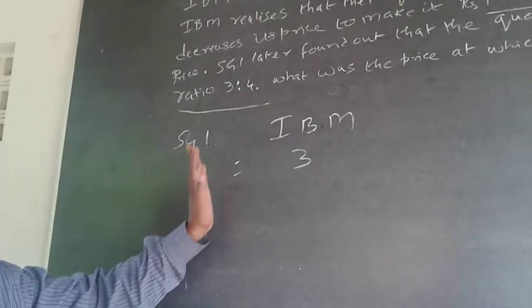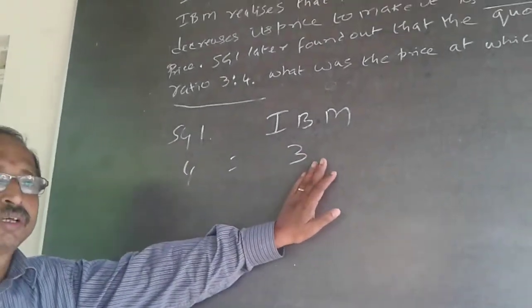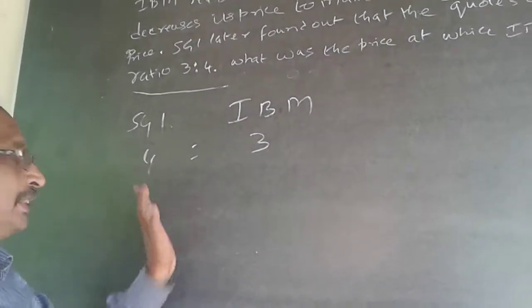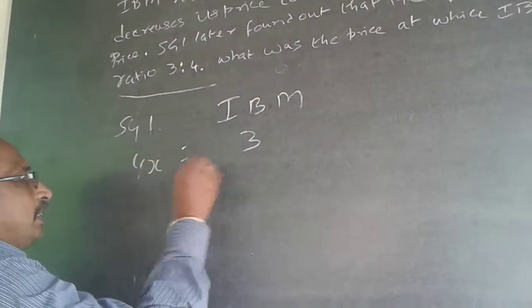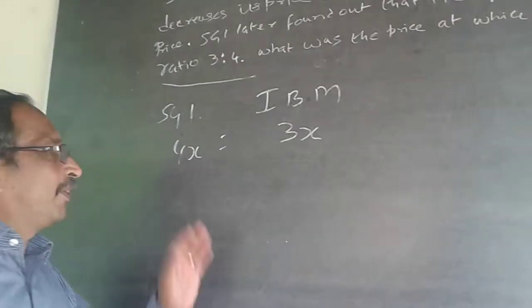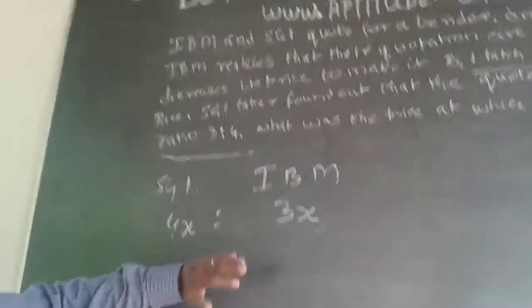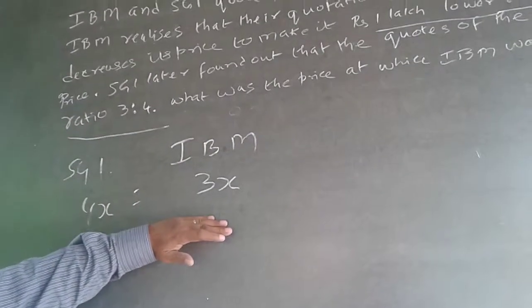You will have to multiply by the same number. So, I will choose X. So, it will be 4x is to 3x. 4x and 3x.